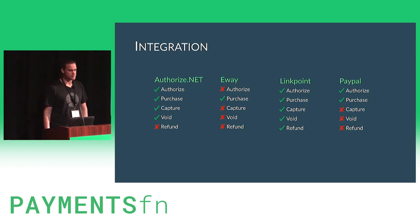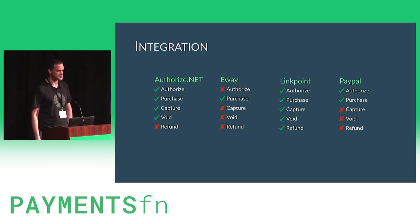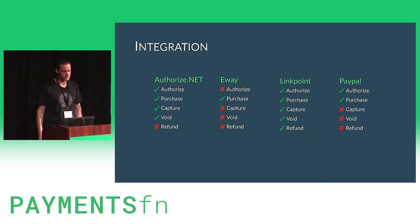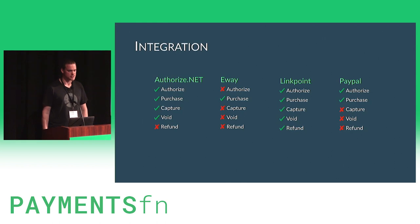There was a lot of variation in what was provided through their APIs. Some supported authorize-and-capture flows, some only supported purchase, they might support refunds or voids, and they might not. There was also no unified spec for all of this — they all had their own XML definition and different endpoints that you would need to interact with.